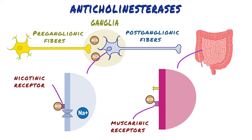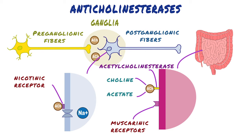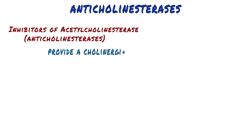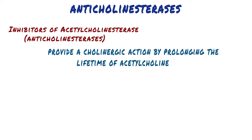The signal at the postjunctional effector site is rapidly terminated because acetylcholinesterase cleaves acetylcholine to choline and acetate in the synaptic cleft. Acetylcholinesterase is an enzyme that specifically cleaves acetylcholine to acetate and choline and thus terminates its actions. It is located both pre- and postsynaptically in the nerve terminal where it is membrane-bound.